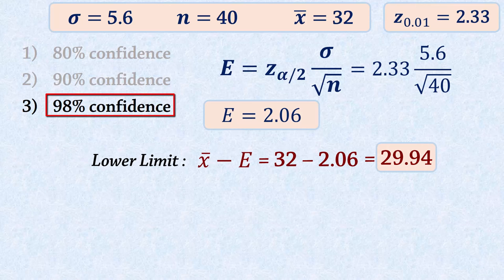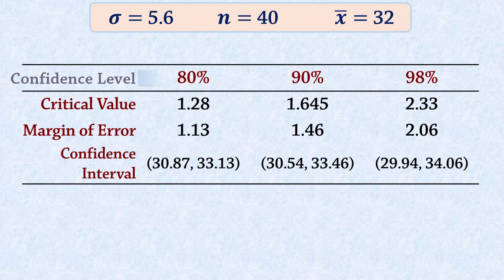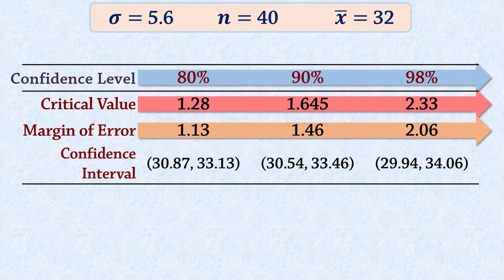From the results, we see that as confidence level increases, the critical value Z increases, the margin of error increases, and consequently, the confidence interval became wider. And that's it for this video.